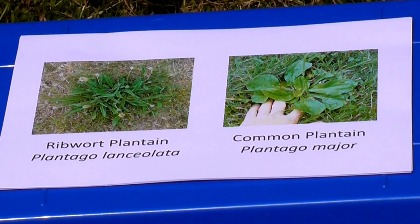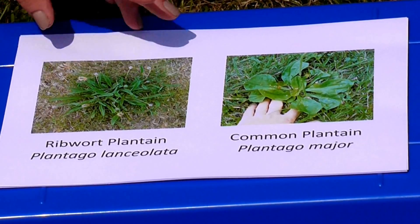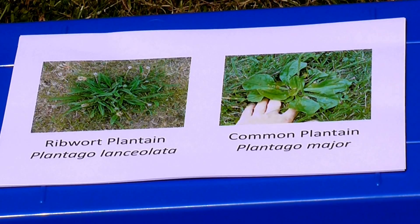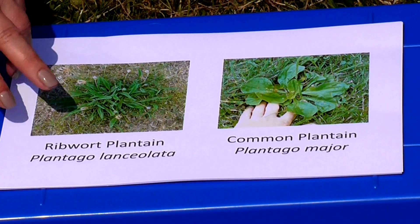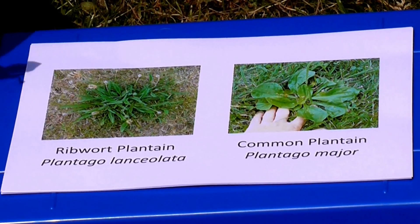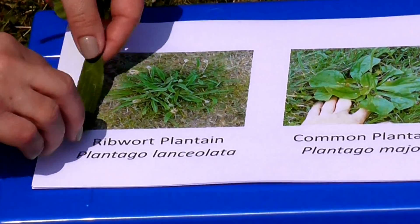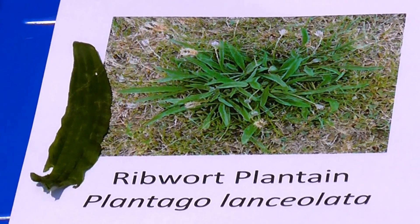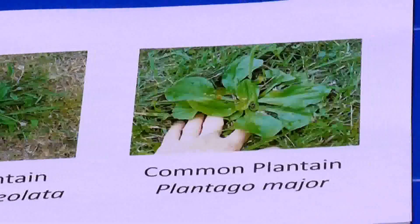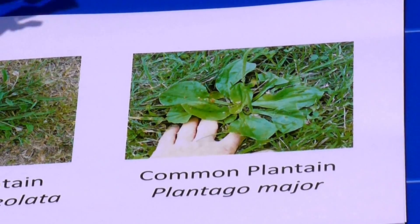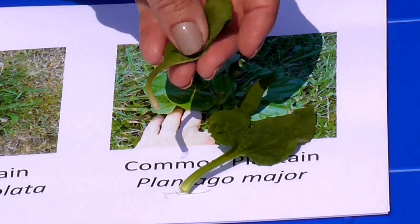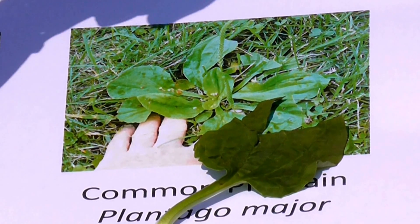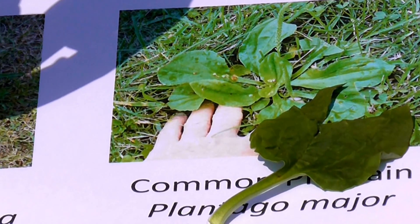Plantago is the genus name of plantains, which are very common grassland plants in this country. There are two in particular that are common on the grassland. One is the ribwort plantain, which has long leaves, easily recognisable because they have ribs running parallel along the leaves. The other species that's very common is the common plantain, plantago major, which has more what I'd call mouser-shaped leaves — broader leaves, but it still has the ribs running parallel along the leaf.